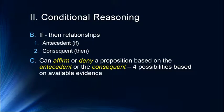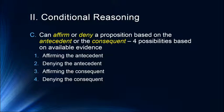We can affirm or deny a proposition based on the antecedent or the consequent, which gives us four possibilities: affirming the antecedent ('I'm a freshman'), denying the antecedent ('I'm not a freshman'), affirming the consequent ('I have to register today'), and denying the consequent ('I don't have to register today'). Two of these provide us with logical conclusions.